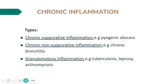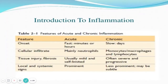There are three different types of chronic inflammation. First, chronic suppurative inflammation — that is pyogenic abscess. Second, chronic non-suppurative inflammation — for example, chronic bronchitis. The most important type is granulomatous inflammation, which includes tuberculosis, leprosy, and actinomycosis. Granulomatous inflammation is the most important type and will be discussed in detail in the next practical.